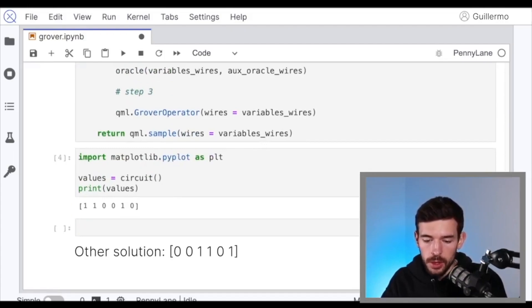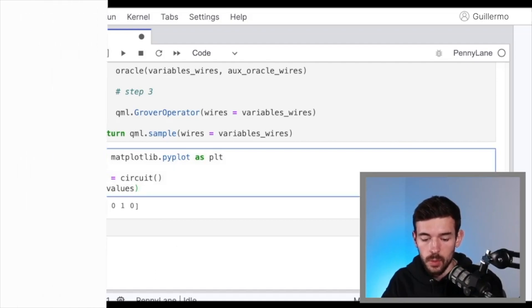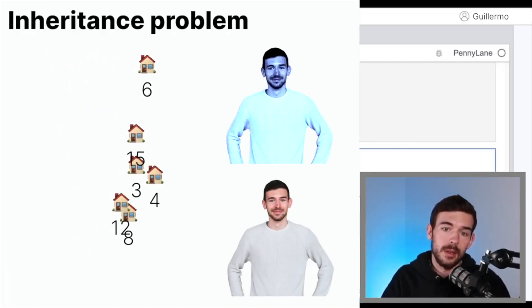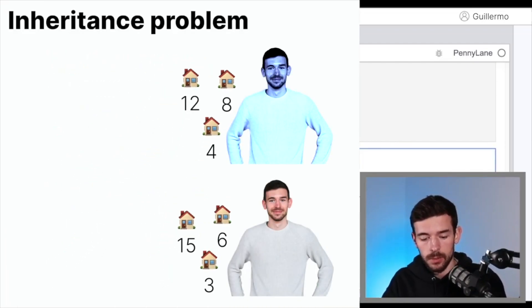Actually, if you are wondering what is this other solution, it's just the symmetry. It means we are going to give to the first sibling the ones, and to the second the zeros. But it would be that.